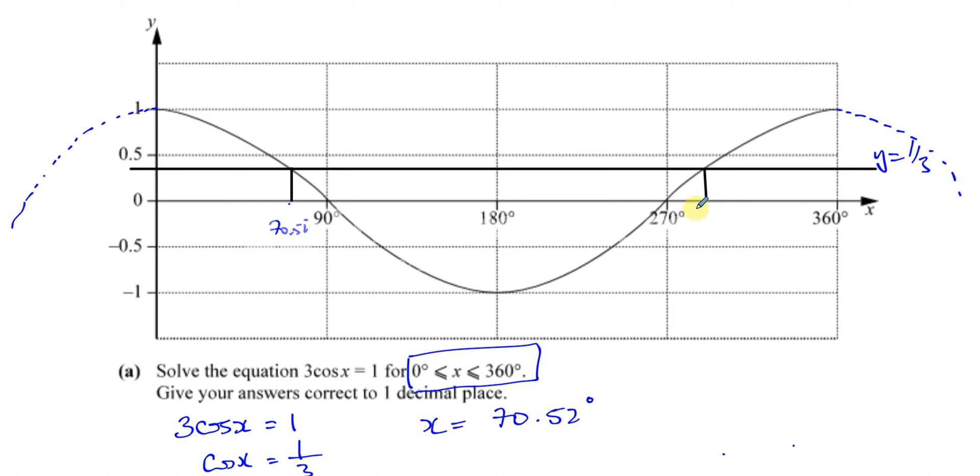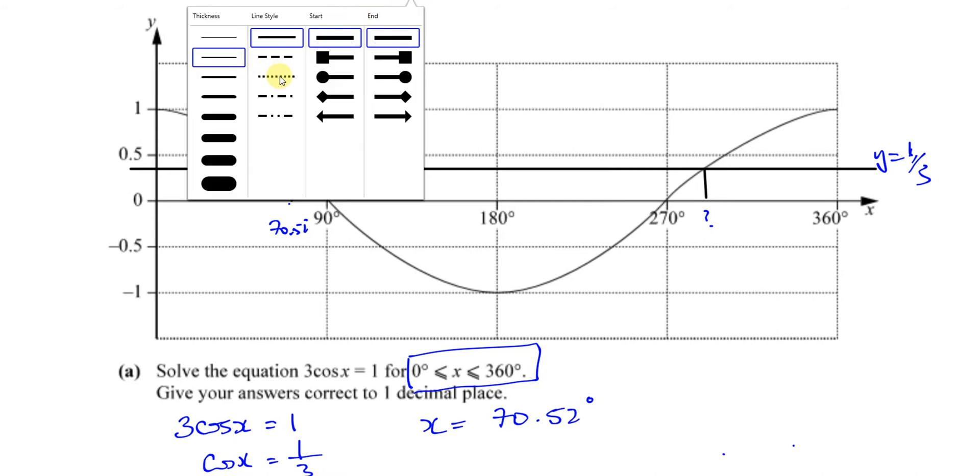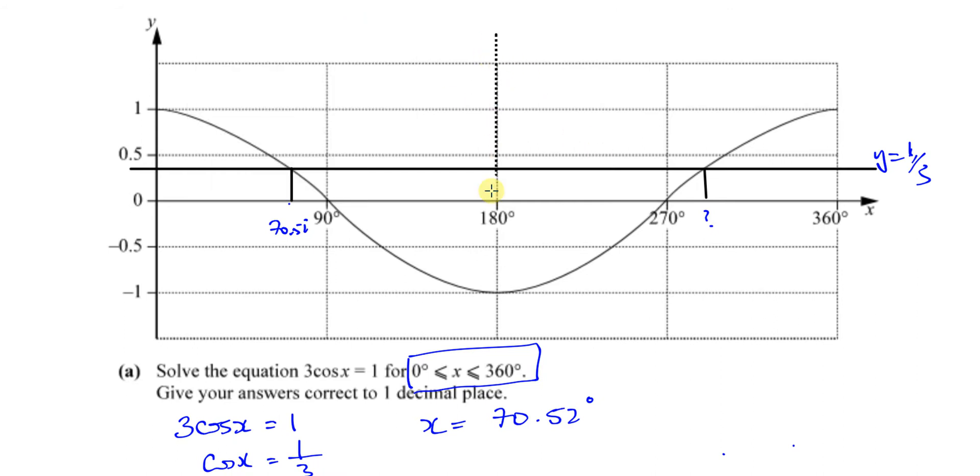So there's an infinite number of solutions actually to this, but we're concerned about finding solutions between zero and 360 in IGCSE work. How do we find this other angle? We can use the fact that this graph is symmetrical about 180 degrees. There's like a line of symmetry at 180 degrees. It's symmetrical about here.